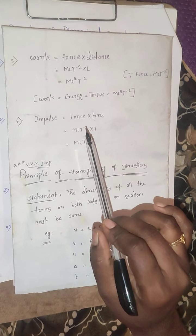Revisiting impulse: the general formula is force into time. Force dimensional formula is M, L, T to the power of minus 2. Multiplied by T gives M, L, T to the power of minus 1. So the dimensional formula of impulse is MLT⁻¹. Thank you for watching this video.